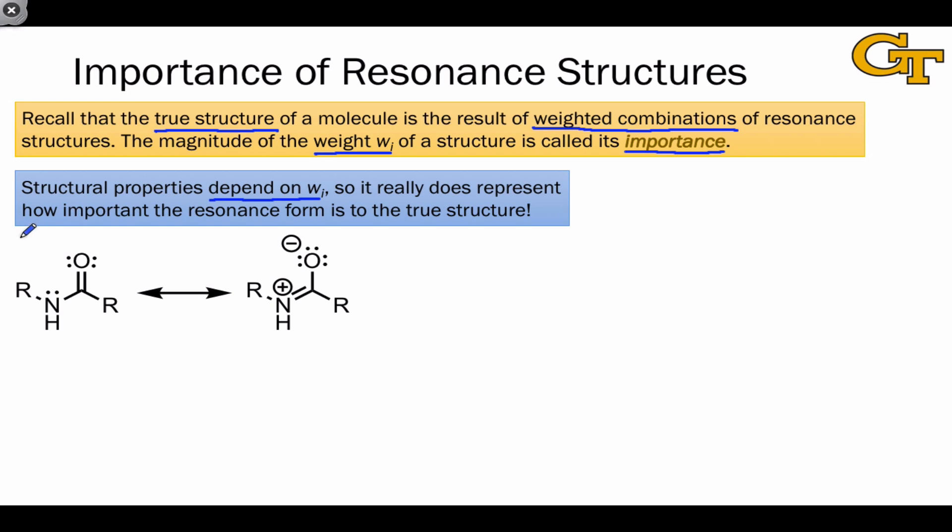We can use the formamide molecule as an example of this. As it turns out, if you do a natural bond orbitals calculation of the formamide molecule, you find out that the best description of the molecule involves about a 70% weight to the neutral structure on the left, and about a 30% weight to the structure on the right.